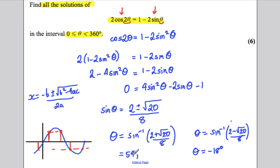So 54. Another solution from 54 is 180 subtract 54, which will clearly be 126 degrees. And the other solutions from negative 18,